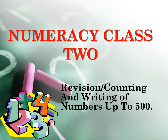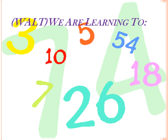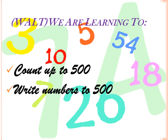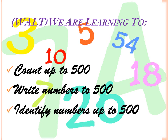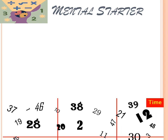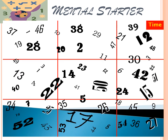Numeracy class 2. Our topic for this first lesson is revision, counting and writing of numbers up to 500. The objectives are counting up to 500, writing numbers up to 500, and identifying numbers up to 500. Let us remind ourselves of some numbers — identify and count in order numbers 1 to 54.